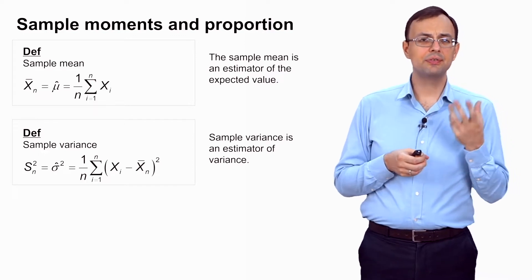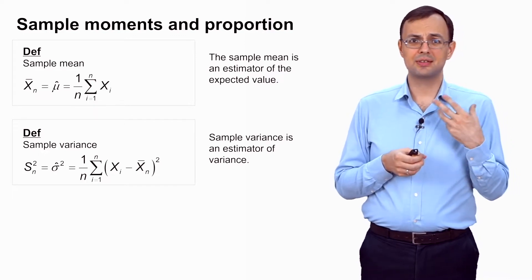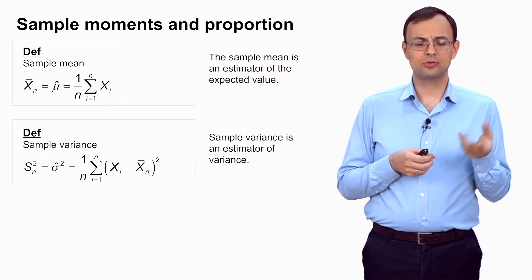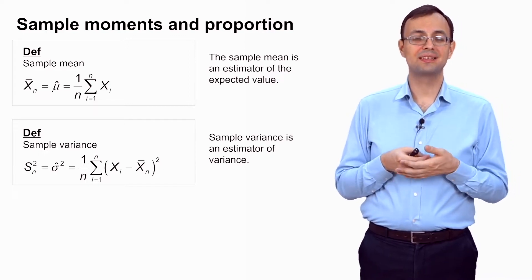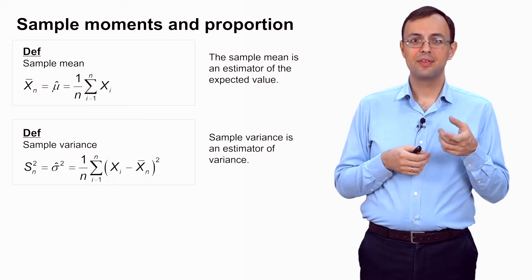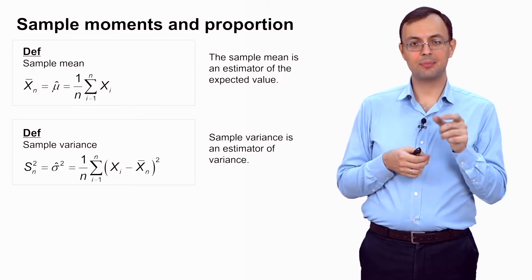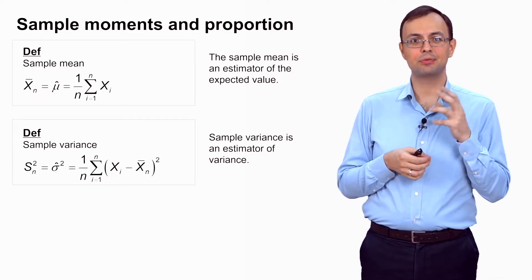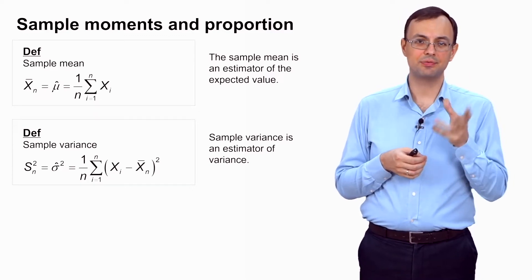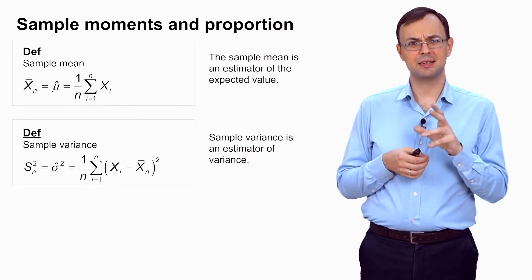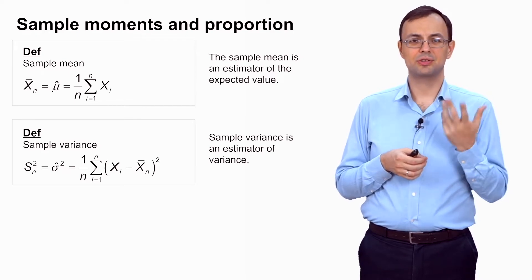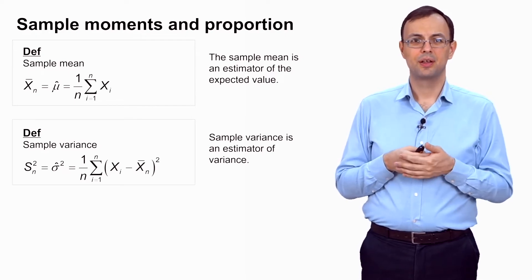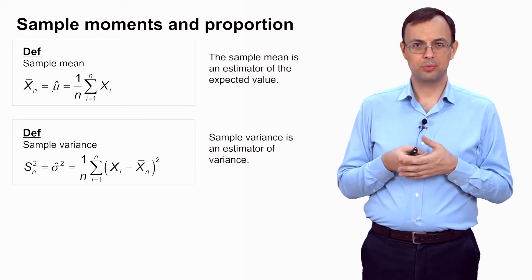The difference between the biased and unbiased sample variance is not very important, especially for large samples. If the sample size n is very large, the difference between dividing by n and n-1 is of no practical importance.